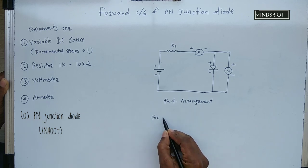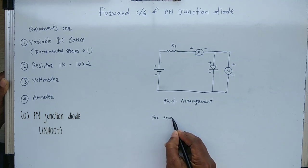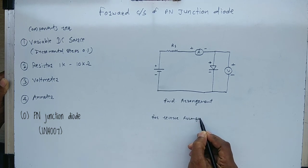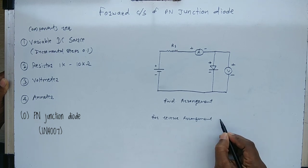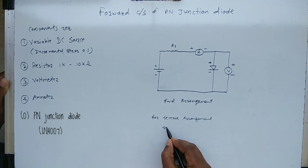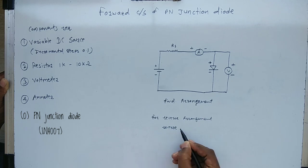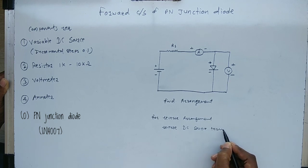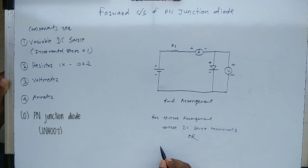Now for the reverse bias — how to convert this circuit into a reverse bias arrangement: either reverse the DC power source terminals, or reverse the terminals of the diode.